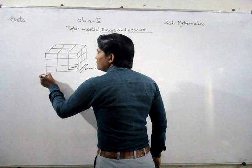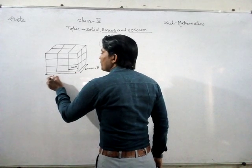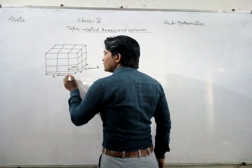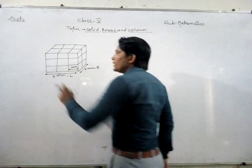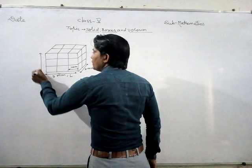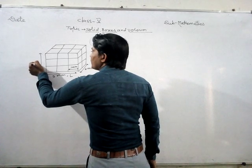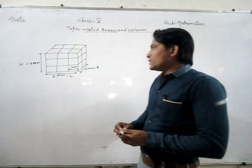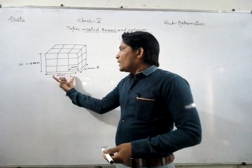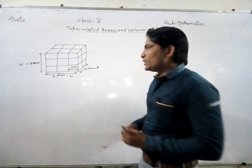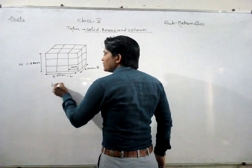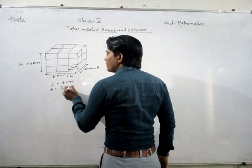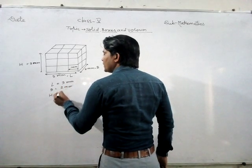Here it is equal to three mm, because one plus one plus one equals three mm, and that is equal to the length. And here again, one, two and three — so it is again equal to three mm, and this is equal to the height. So students, we can clearly see that length, breadth and height are all unequal. The length is three mm and height is again three mm.